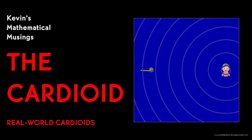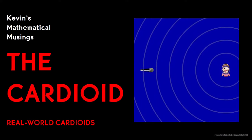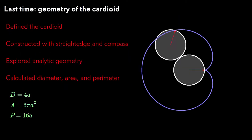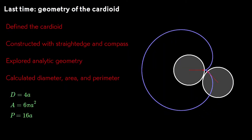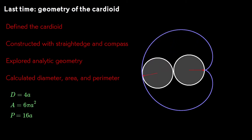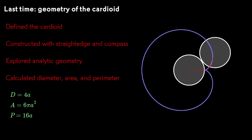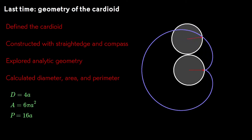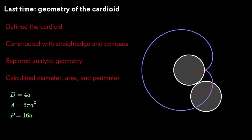In this video, I'm going to continue exploring the cardioid, which is one of my favorite geometric figures. I'll look at a couple of real-world examples. We've seen in earlier episodes how to define the cardioid and construct it with straight edge and compass. We've explored its analytic geometry and derived formulas for diameter, area, and perimeter.